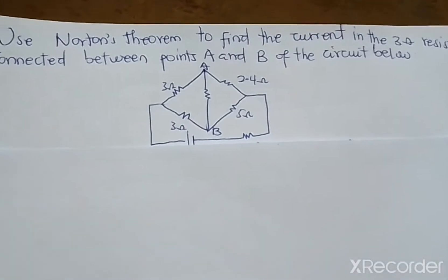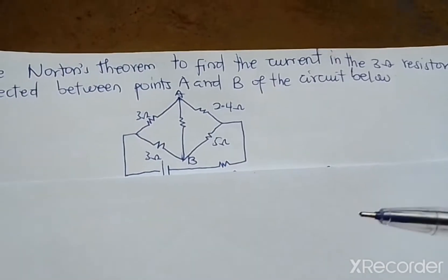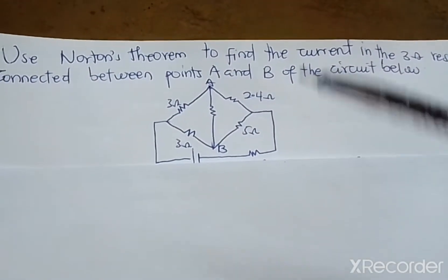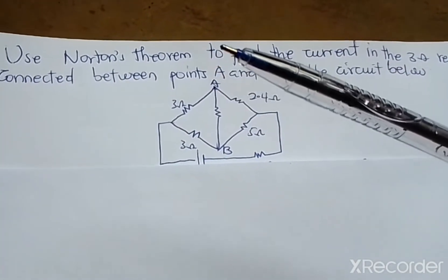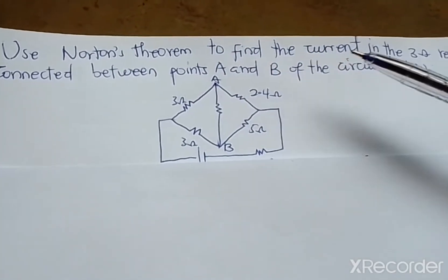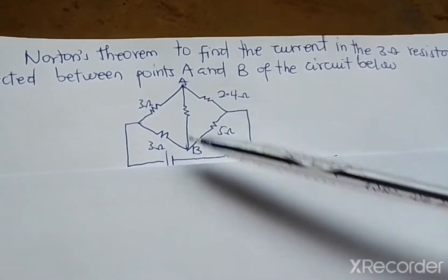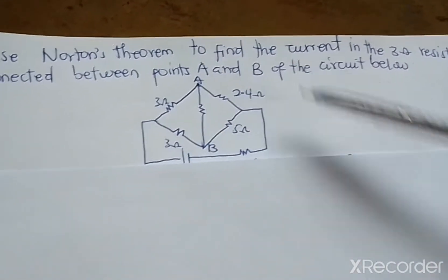Hello viewers, welcome to another section of my tutorial. Today I have a problem in applied physics - this is a bridge circuit problem using Norton's theorem. You should use Norton's theorem to find the current in the 3-ohm resistor connected between points A and B of the circuit below.